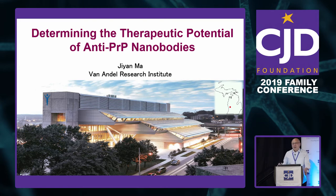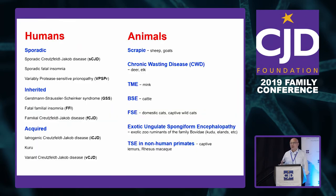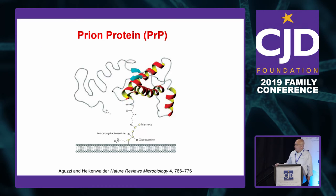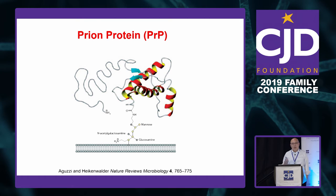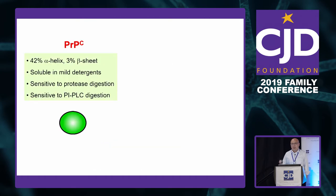We all know now that there's a large group of diseases with different clinical manifestations or different pathologies — they're all called prion disease. The reason is that they all involve this protein called PRP, which is a protein attached to the cell membrane through an anchor we call the GPI anchor. This is a highly conserved protein and it's abundantly expressed in everybody's brain. Luckily, in most of us, the protein is in a normal form, which we call the PRPC.